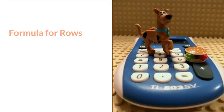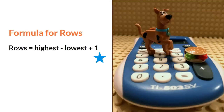There is one important formula for creating a grouped frequency table: rows equals the highest score minus the lowest score plus 1. In other words, you take the highest score in your data set, subtract the lowest score, and add 1. The blue star here is to remind you of this formula. This formula will give you an estimate of how many possible rows you should have in your frequency table.